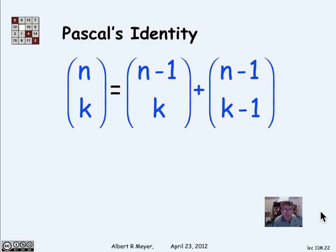Let's look at an example that actually has some use. It's called Pascal's Identity, or Pascal's Triangle Identity. And it says that if you want to compute the binomial coefficient n choose k, it's sufficient to add up the two binomial coefficients n minus 1 choose k and n minus 1 choose k minus 1.